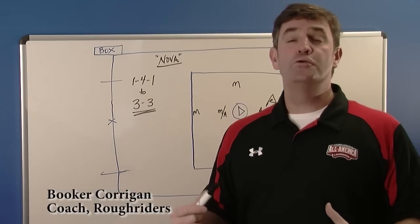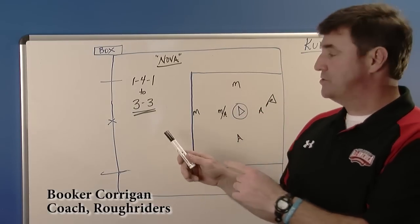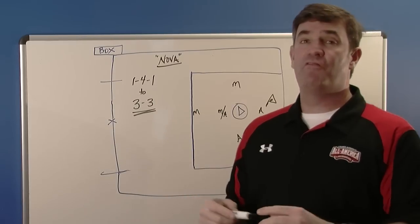Booker Corrigan back with another two-minute drill. Today we're going to go quickly on an extra man opportunity from a 1-4-1 to a 3-3 in about four passes.